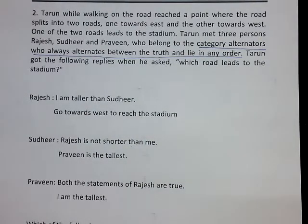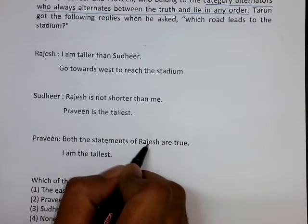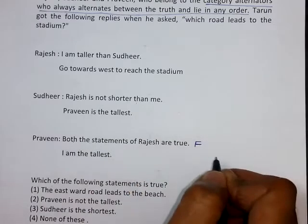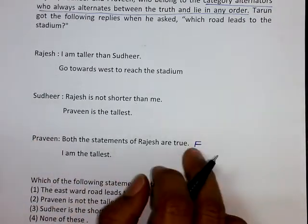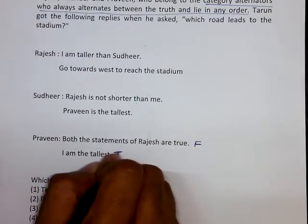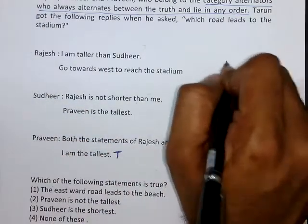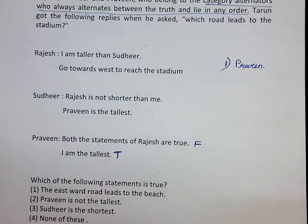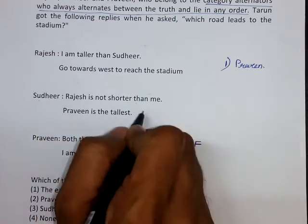Now we can see that Praveen is making a statement: 'Both the statements of Rajesh are true.' This is not possible because every person involved is an alternator. Since Praveen is an alternator, the first statement is false, which means the second statement has to be true — meaning that among Rajesh, Sudhir, and Praveen, Praveen is the tallest.